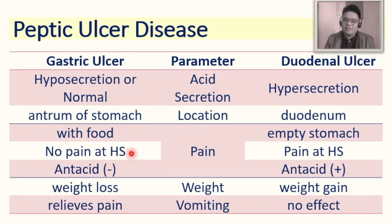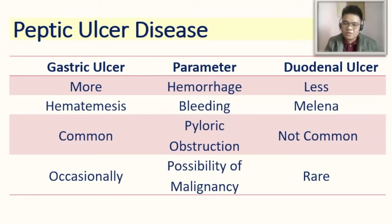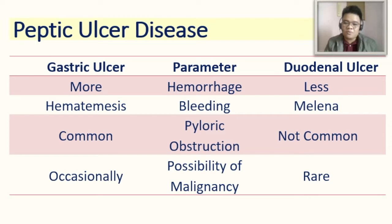In gastric ulcer, there is no pain at evening, whereas in duodenal ulcer, pain is persistent at night. Vomiting relieves pain in gastric ulcer but has no effect in duodenal ulcer. Hemorrhage is more common in gastric ulcer because the stomach is rich with blood vessels, and bleeding typically manifests as blood in the vomitus. In duodenal ulcer, bleeding manifests as melena in the stool. Pyloric obstruction is common in gastric ulcer but not in duodenal ulcer. The possibility of malignancy is occasional in gastric ulcer but rare in duodenal ulcer.